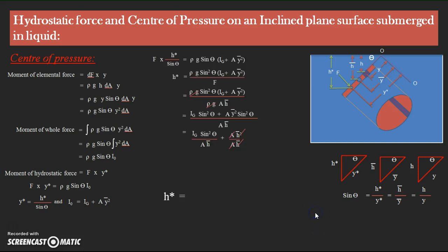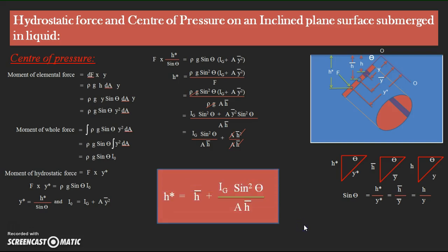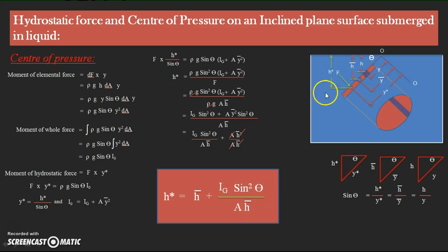The final equation for the center of pressure is: H-star = H-bar + IG·sin²θ / (A·H-bar), which gives the location of the center of pressure from the free surface for an inclined plane submerged in liquid. In summary: hydrostatic force is F = ρG·A·H-bar (same as for a vertical plate), while center of pressure is H-star = H-bar + IG·sin²θ / (A·H-bar). I hope you understand this derivation. Please feel free to comment, and thank you all.